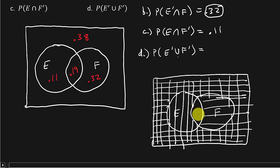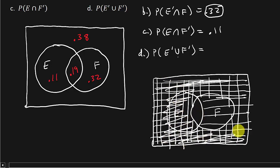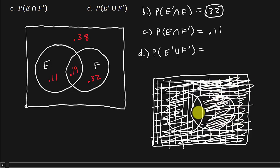So what would we add up? We would add up everything where there's a line, everything, except for that right there in the middle. So we would add the .11, the .32, and the .38. So that's .11 plus .32 plus .38, which that is equal to .81. And there's your answer.